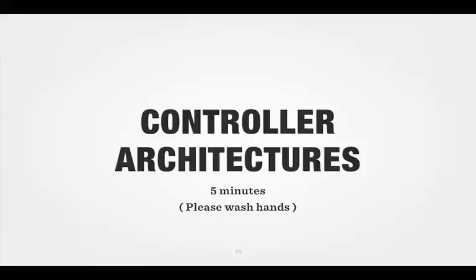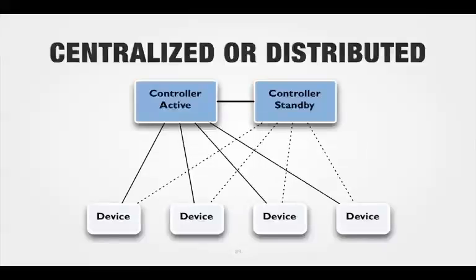During the break, we had a number of questions about controller architectures. The first model is whether we decide on centralized or distributed controllers. A centralized controller would be what networking professionals are very comfortable with today — controller active, controller standby. If the active controller loses its heartbeat, the standby takes over. That's exactly what we know today in a standard chassis-based switch with two supervisors or two central processing engines. This is known as a centralized high availability controller design.